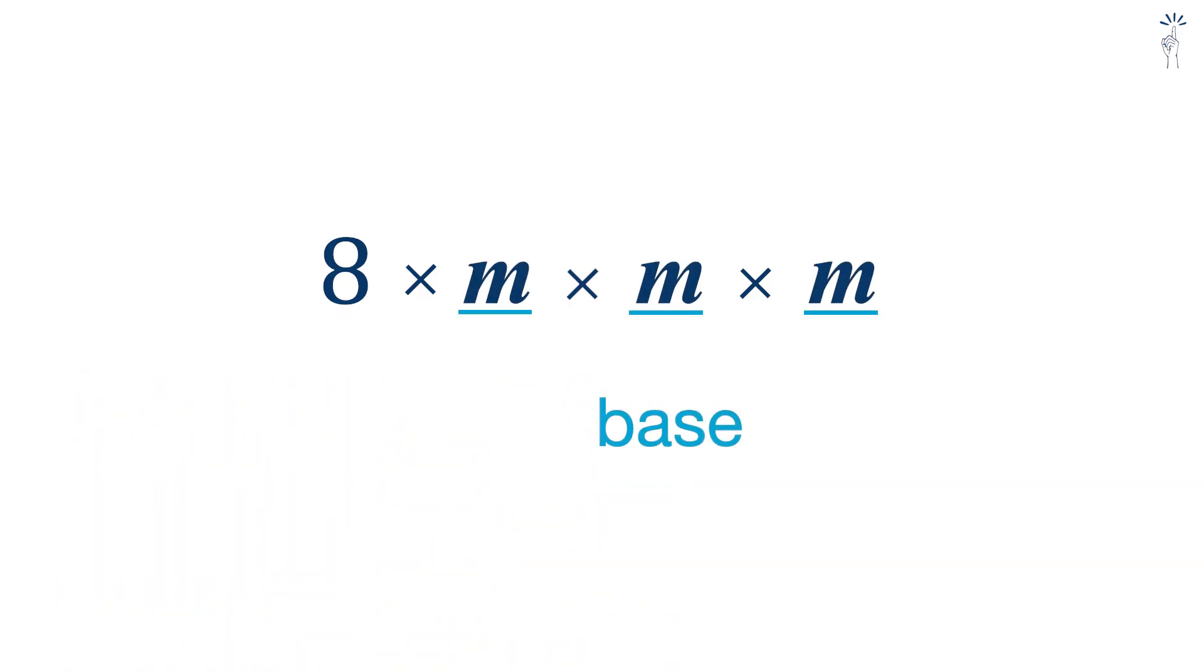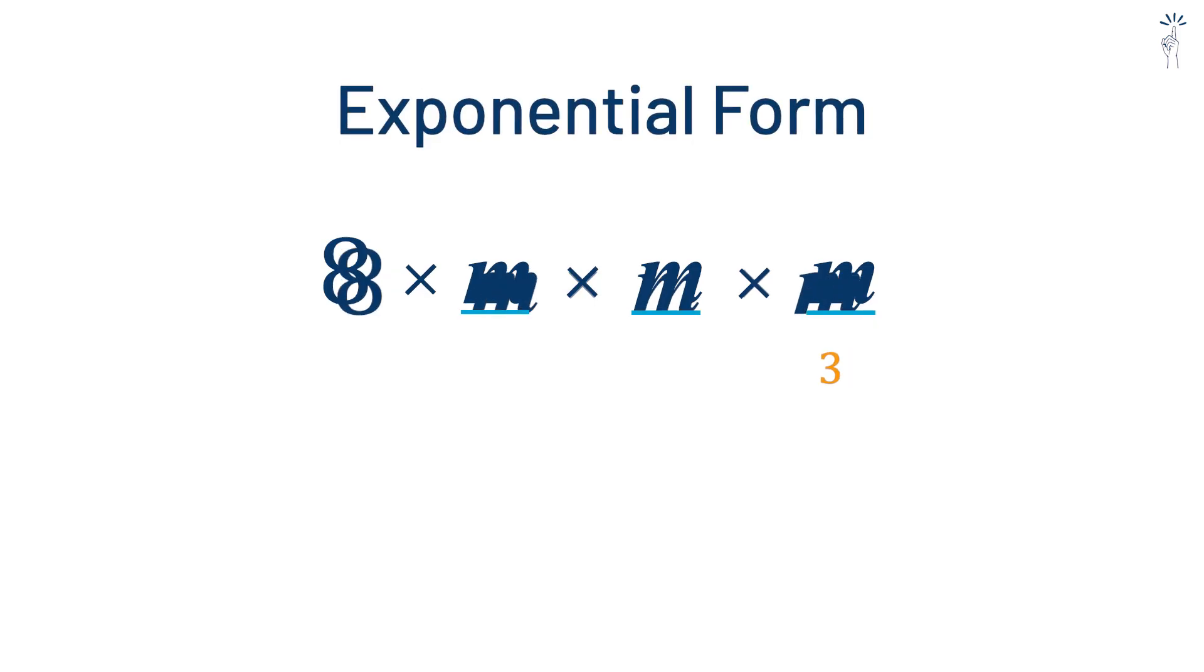The base here is m. And since m appears three times, the exponent is three. So, in exponential form, we write it as 8m to the power of three.